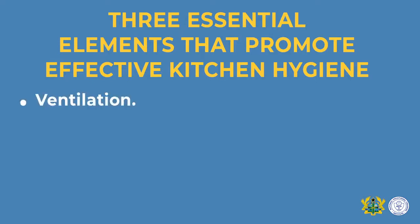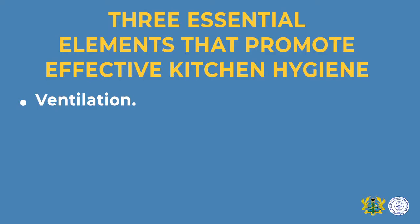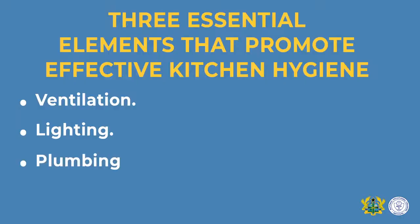Let us now look at three essential elements that promote effective kitchen hygiene. 1. Good ventilation — there should be good ventilation in the kitchen, with enough windows to enable fresh air to enter and stale air to go out, creating an enabling environment for kitchen staff. There should also be fume extractors to take away stale air. 2. Good lighting is also important to enable kitchen staff to see clearly and clean effectively. 3. Plumbing — there should be adequate hot and cold water to aid in the cleaning of the kitchen, which will in totality promote good kitchen hygiene.